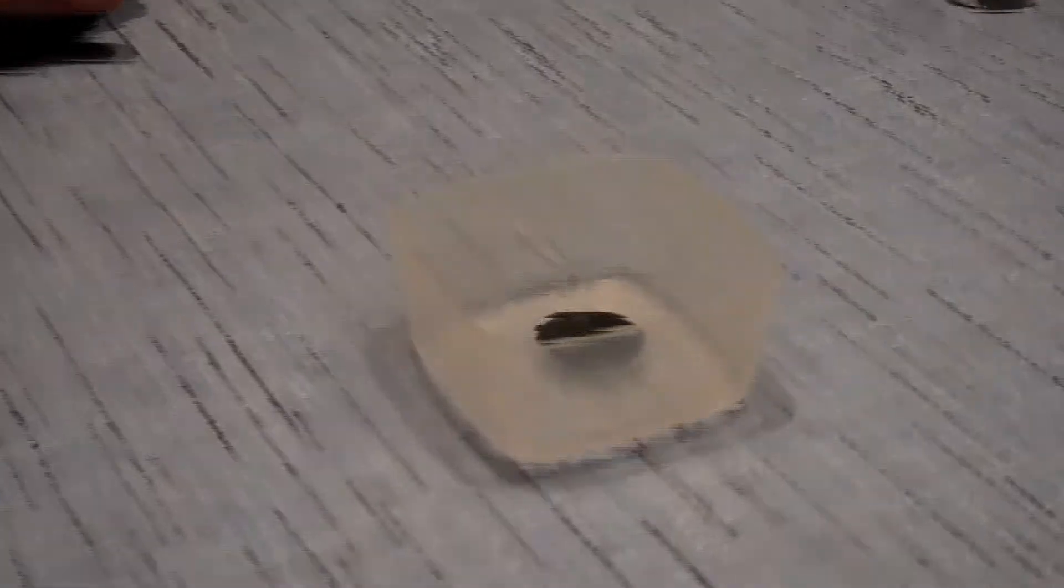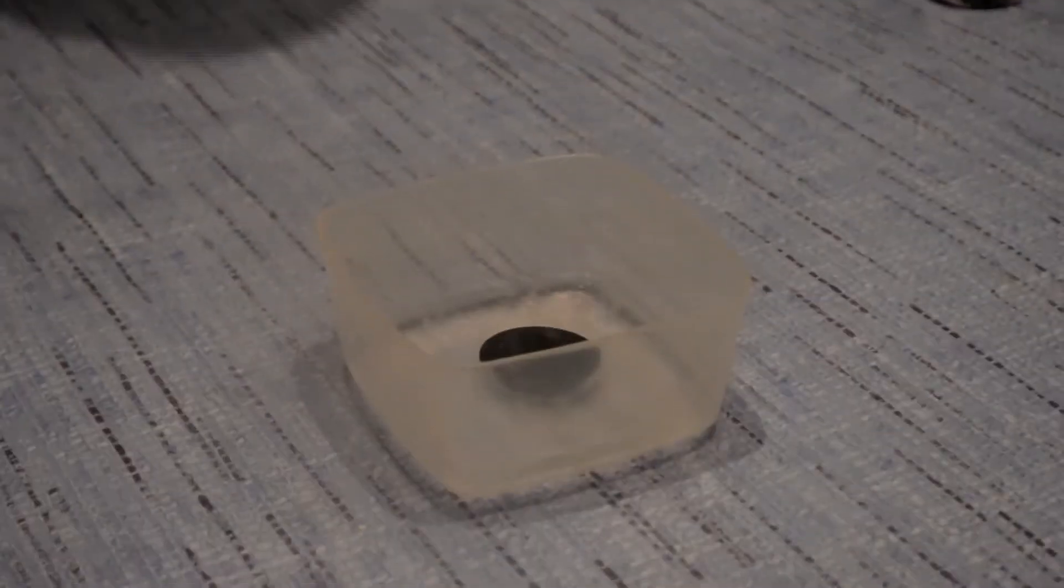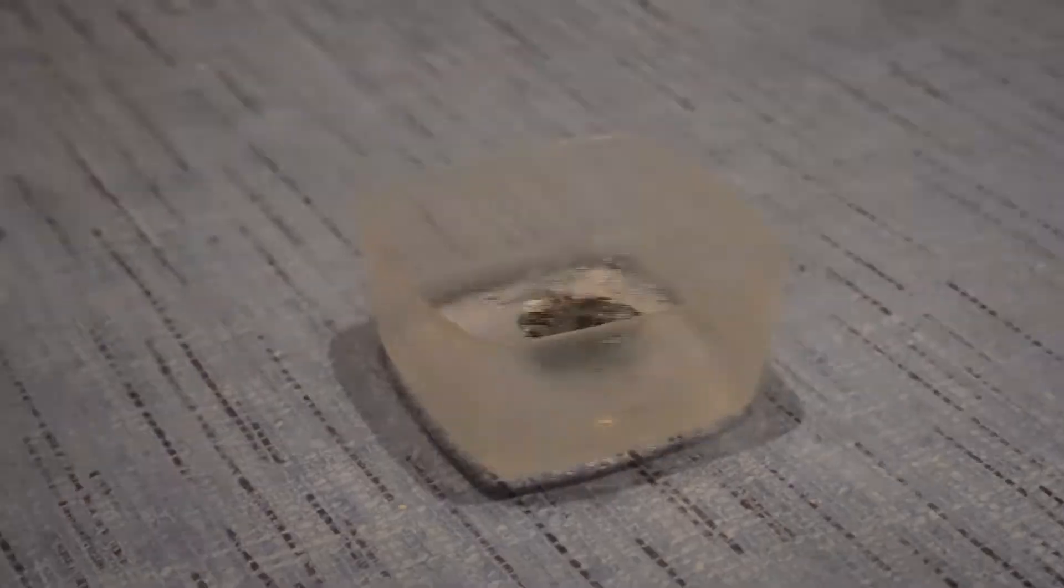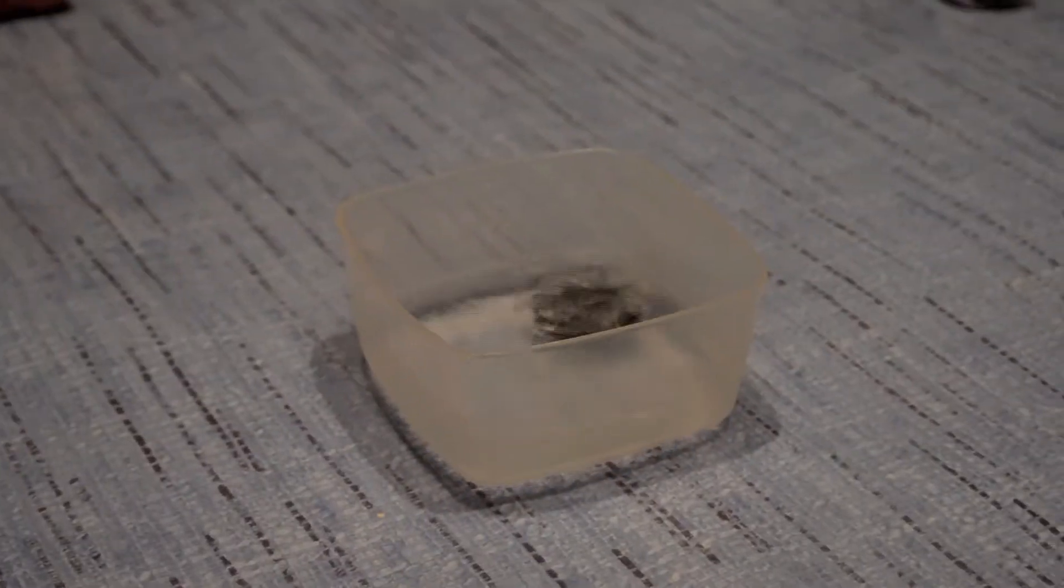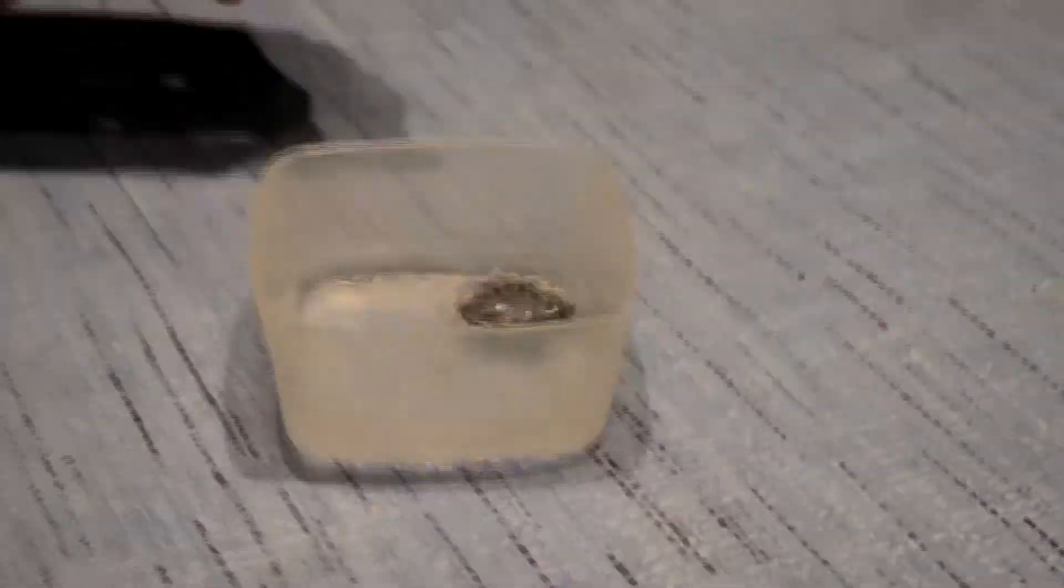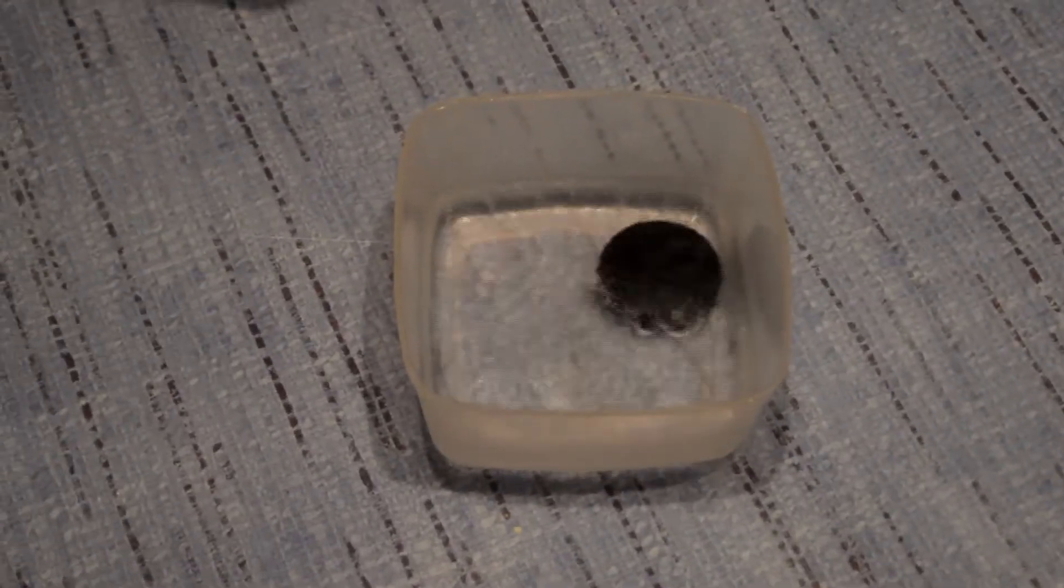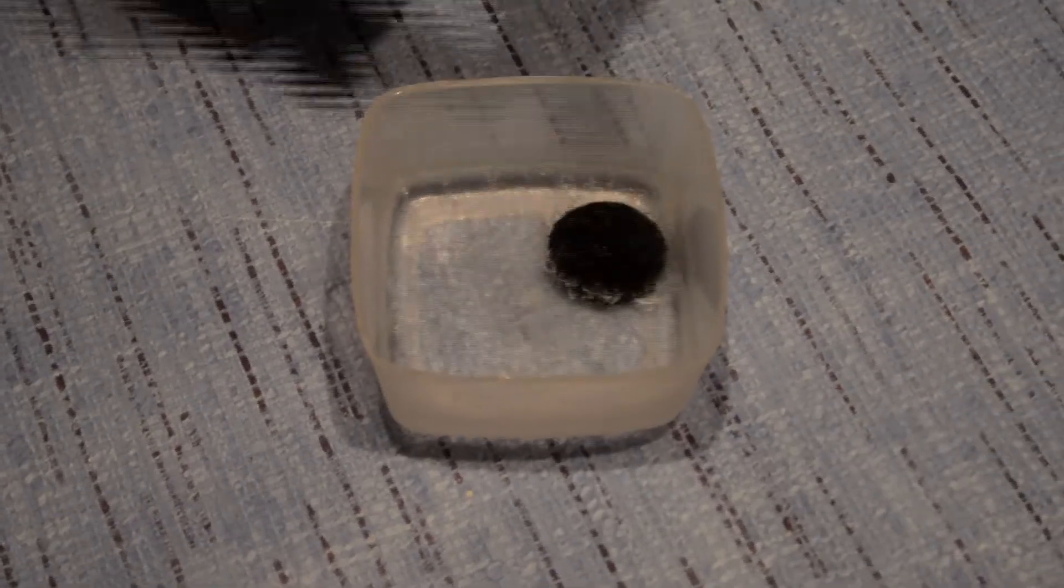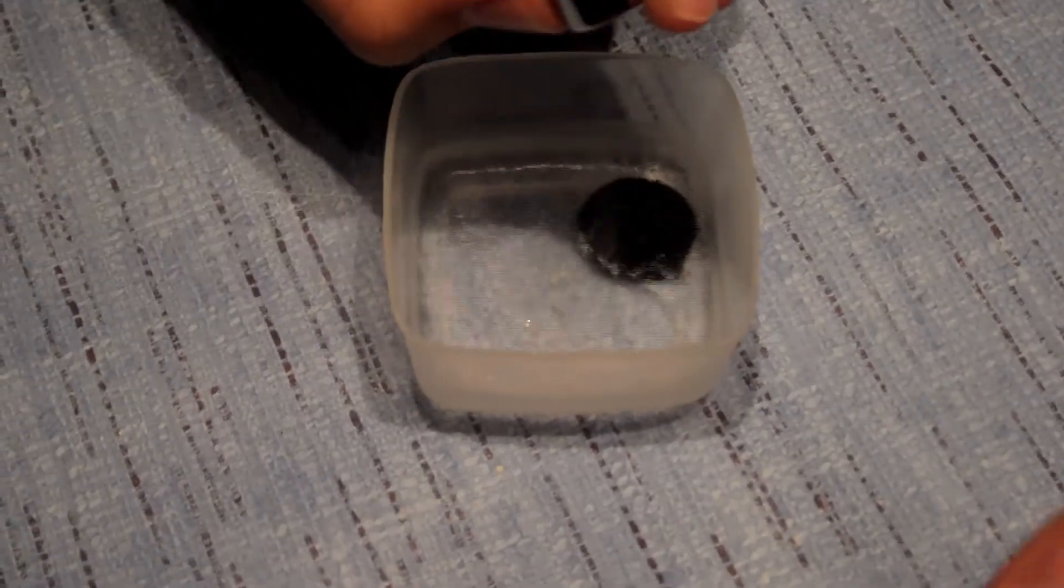Just give it a moment for the superconductor to cool down. Okay, so now that this superconductor has become superconductive, when one places a magnet over it, the superconductor completely expels the magnetic field.